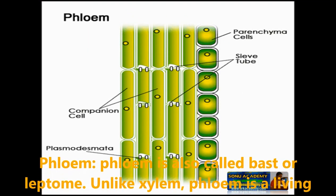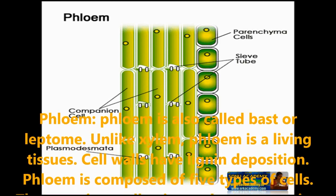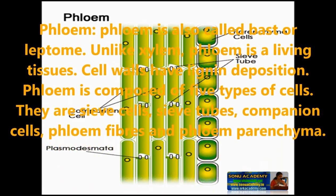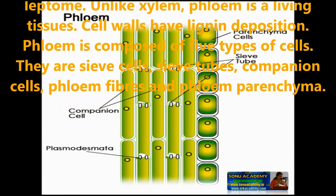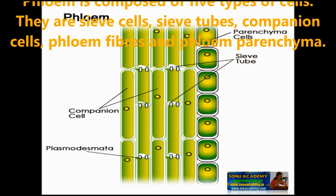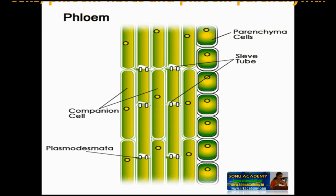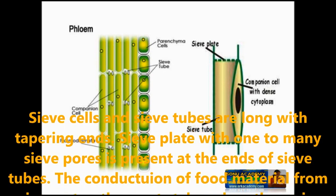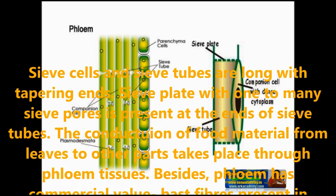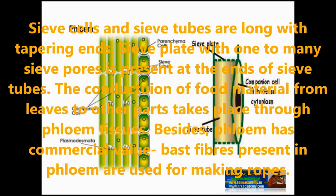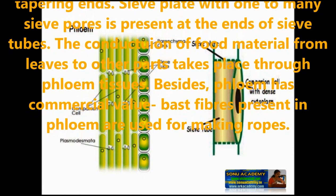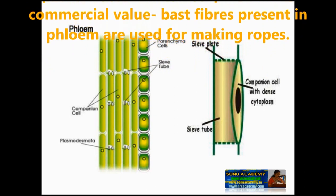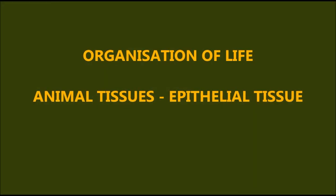Phloem is also called bast or leptome. Unlike xylem, phloem is a living tissue. Cell walls have lignin deposition. Phloem is composed of five types of cells: sieve cells, sieve tubes, companion cells, phloem fibers and phloem parenchyma. Sieve cells and sieve tubes are long with tapering ends. Sieve plates with one to many sieve pores are present at the end of sieve tubes. The conduction of food material from leaves to other parts takes place through phloem tissue. Bast fibers present in phloem are used commercially for making rope.